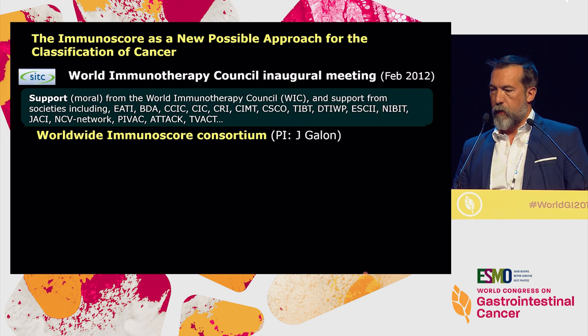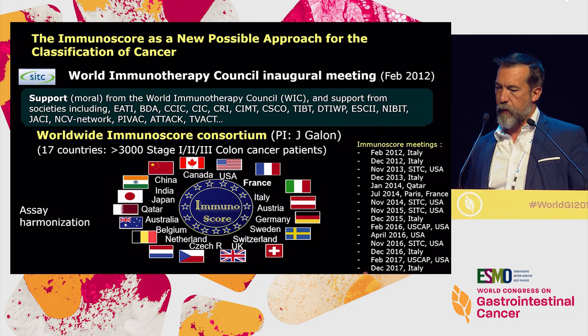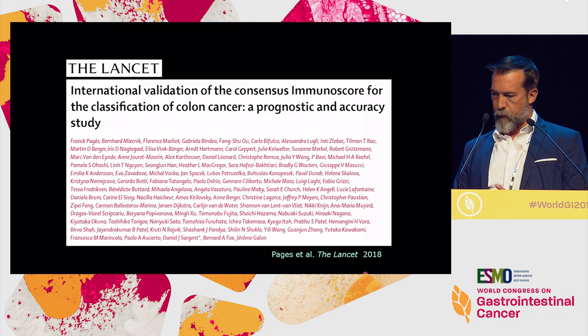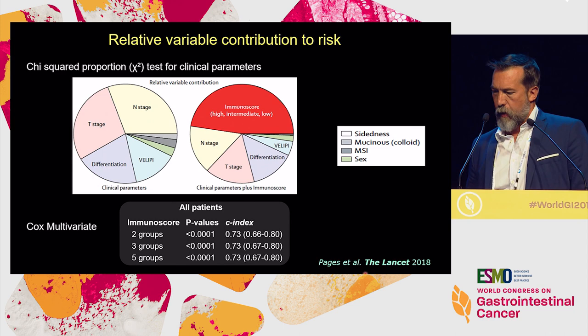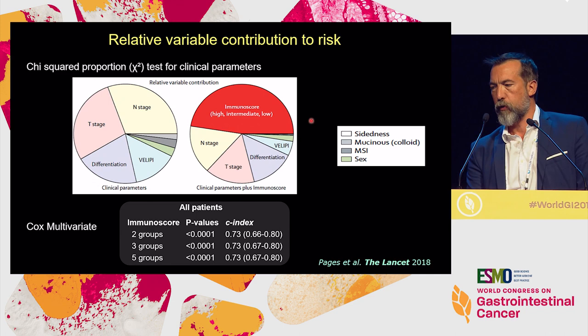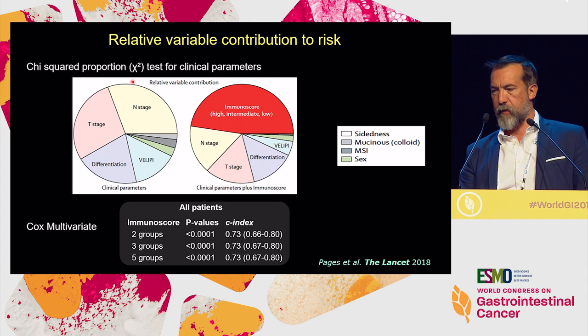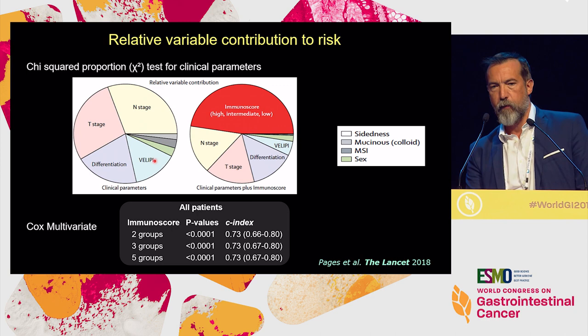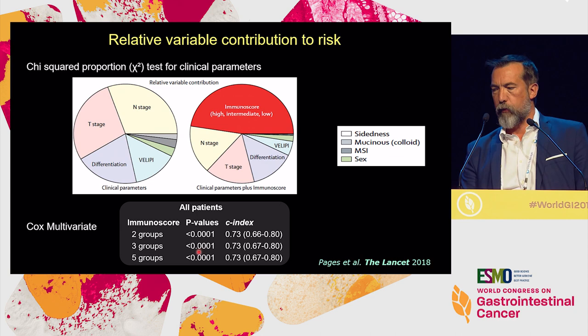That's why we initiated a worldwide consortium with many countries involved in testing and validating immunoscore. The international validation of the consensus immunoscore was published in The Lancet, showing that immunoscore represents half of the risk compared to all other parameters. Without immunoscore, N-stage is most important, followed by T-stage, grade of differentiation, venous emboli, lymphatic invasion, perineural invasion, and MSI. But when you add immunoscore, all other parameters — N-stage, T-stage, grade, MSI — become dependent upon immunoscore in Cox multivariate analysis, with p-values below 0.0001 in all groupings.